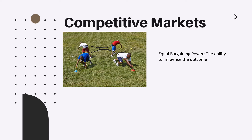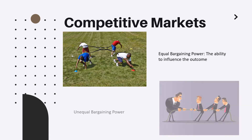In our scenario, we observe bargaining power as the ability to influence price, which means the price cannot be changed by one company and all companies will be price takers. For non-competitive markets, think of a different tug-of-war situation — now with unequal bargaining power, where one side has significantly greater physical power and others cannot outperform them.